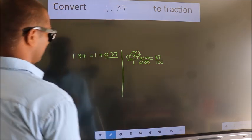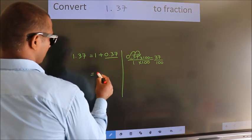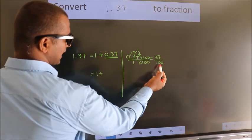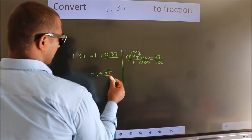Now, here, 1 plus, in place of this, we write this fraction: 37 by 100.